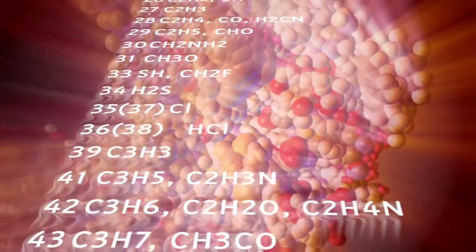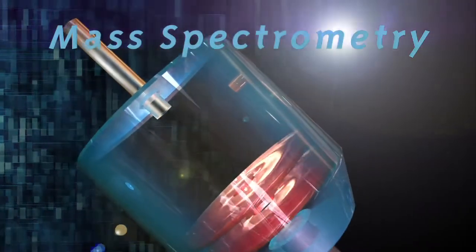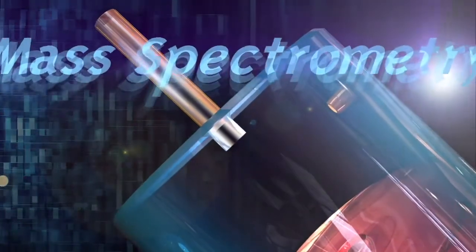While chromatography separates compounds depending on their chemical and physical properties, mass spectrometry, or mass spec as it is commonly known, reveals a compound's molecular weight.